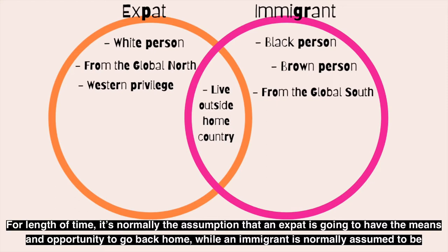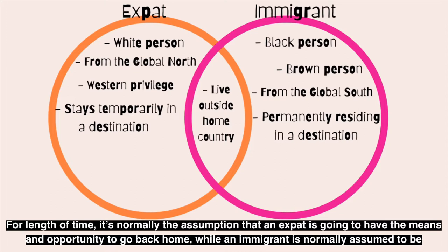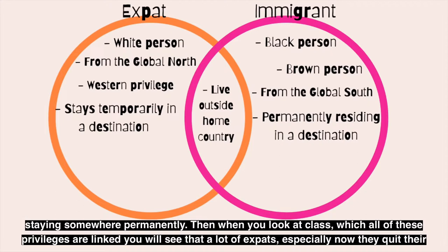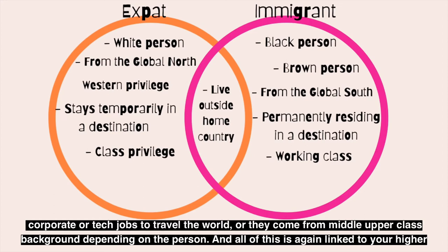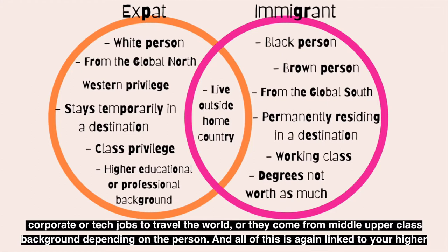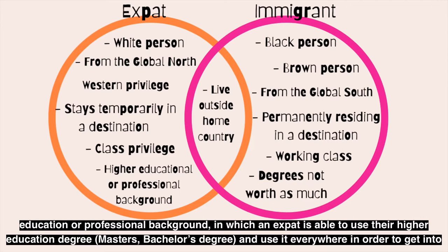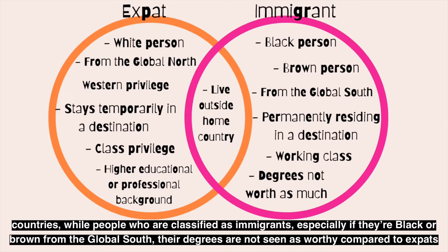For length of time, it's normally assumed that an expat has the means and opportunity to go back home, while an immigrant is assumed to be staying somewhere permanently. When you look at class, a lot of expats especially now quit their corporate or tech jobs to travel the world, or come from middle to upper class backgrounds. This is linked to higher education: an expat is able to use their bachelor's or master's degree everywhere to gain entry into countries, while people classified as immigrants — especially Black or brown people from the Global South — have their degrees seen as less worthy because they weren't from schools in the Global North.